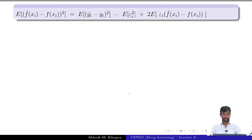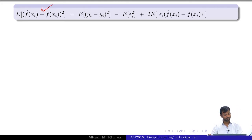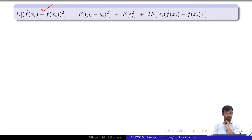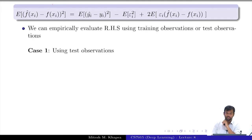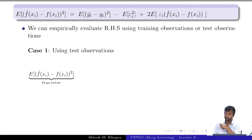This was our original equation — we are interested in the left-hand side quantity, which is a sum of terms on the right-hand side. We can estimate these expectations from data, but from which data — training or test? We will try both and see if there is any difference. First, I will use test observations: summation over indices n+1 to n+m, the test points.